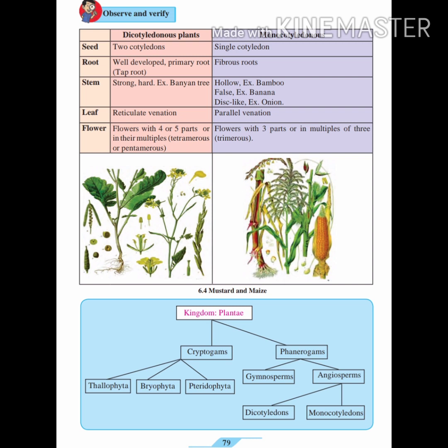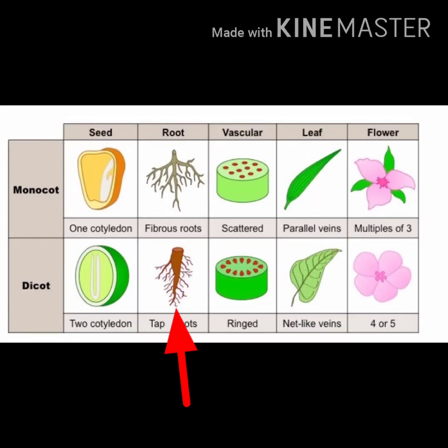Looking at the roots: dicotyledonous plants have a tap root — one main root with various branch roots forming from it. Monocotyledonous plants have fibrous roots, meaning the roots start with many branches and sub-branches from the beginning. You can see diagrams to understand tap root versus fibrous root.